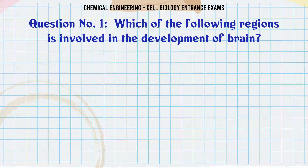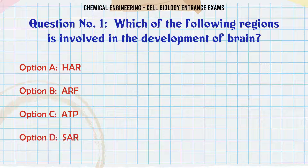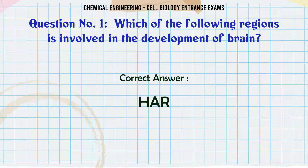Which of the following regions is involved in the development of brain? A. HER. B. ARF. C. ATP. D. SAR. The correct answer is HER.